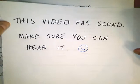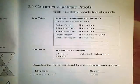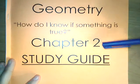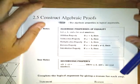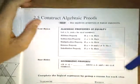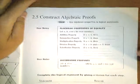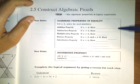Hopefully everybody can hear this video. The lesson we're going to do today is Lesson 2.5, that's Chapter 2, Section 5, in the Geometry note-taking guide called the Study Guide, Chapter 2. This section is on constructing algebraic proofs. A lot of what we're going to be doing when we do algebra is stuff that you've seen before, but we're going to be using it in a little different way.